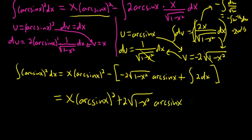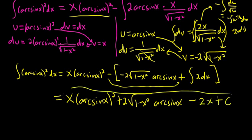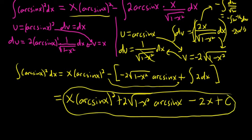So this is equal to x arcsine x quantity squared plus 2 square root 1 minus x squared arcsine x minus 2x plus c. I kind of rushed through some parts of this video. It was only not even five minutes, but hopefully it made some sense. I hope it helps someone. That's it.